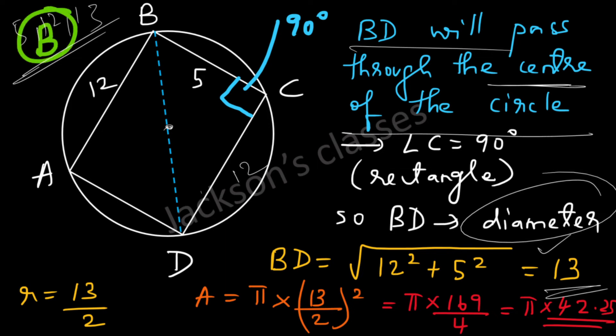169 by 4, that's somewhat more than 40. So you don't need to find the exact value. If you look at the options you have 36π, 42.25π, and 64π. So 160 by 4 is 40, so this is a little bit more than 40. So the answer has to be option B.